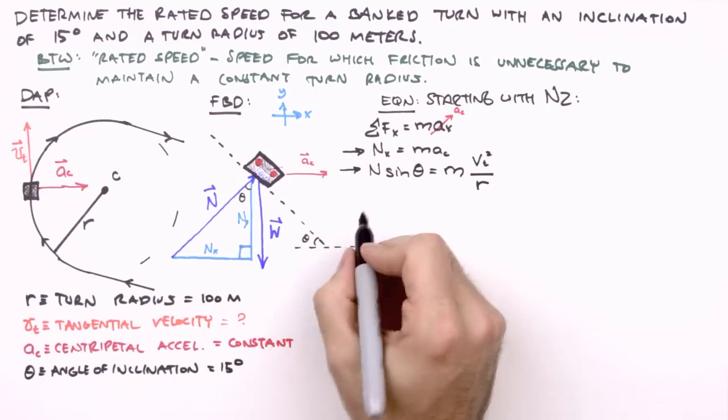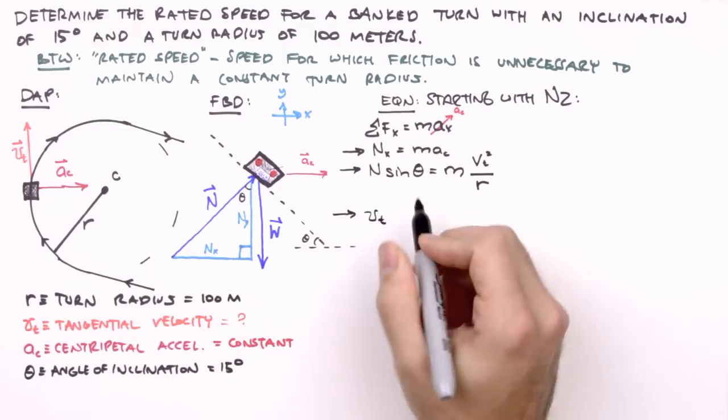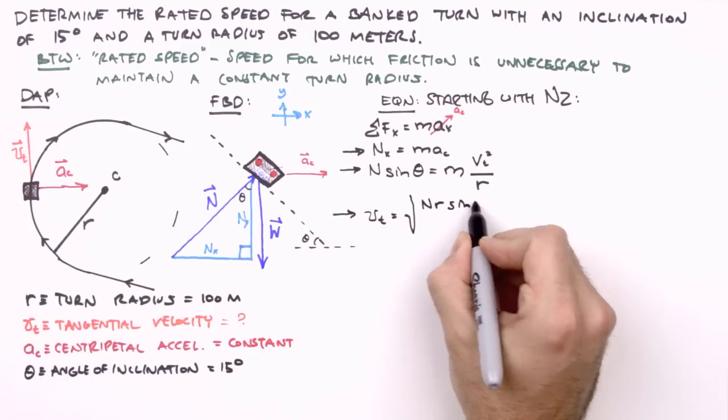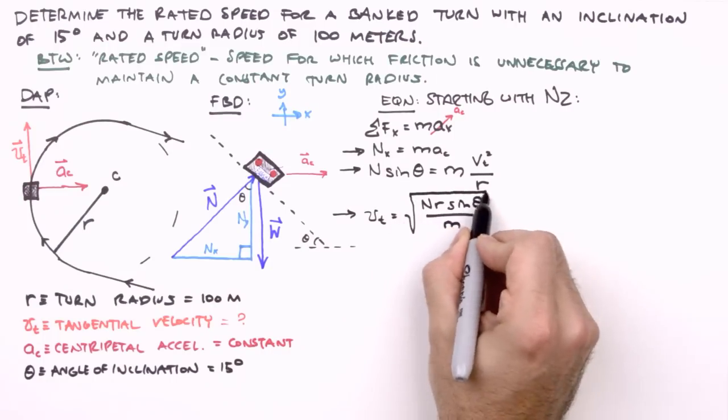Solving for v sub t, we get v sub t equals plus or minus the square root of n, r sin theta, divided by m. Now, I didn't actually write the plus or minus symbol, because only the positive value for v sub t makes physical sense here. So it's not like I just forgot to write it in, okay?